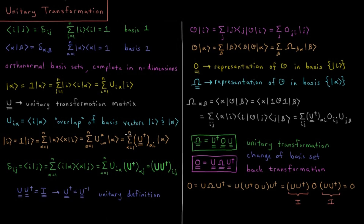That equals sum from alpha equals 1 to n of u_{alpha,i} — where we've switched the indices — and this would be the adjoint of our original unitary matrix acting on basis vector alpha. We know that the bracket ⟨i|j⟩ has to be the Kronecker delta, because i and j form an orthonormal set, as stated earlier.